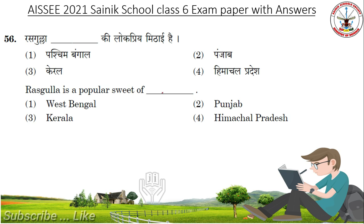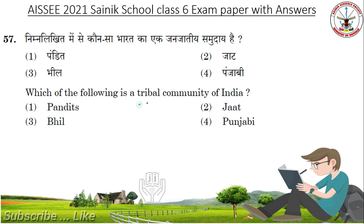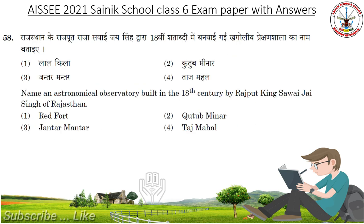Rasgulla is a popular sweet of West Bengal. Which of the following is a Tribal Community of India? Answer: Bill. Name of an Astronomical Observatory built in the 18th century by Rajput King Sawai Jai Singh of Rajasthan. Answer: Jantar Mantar.